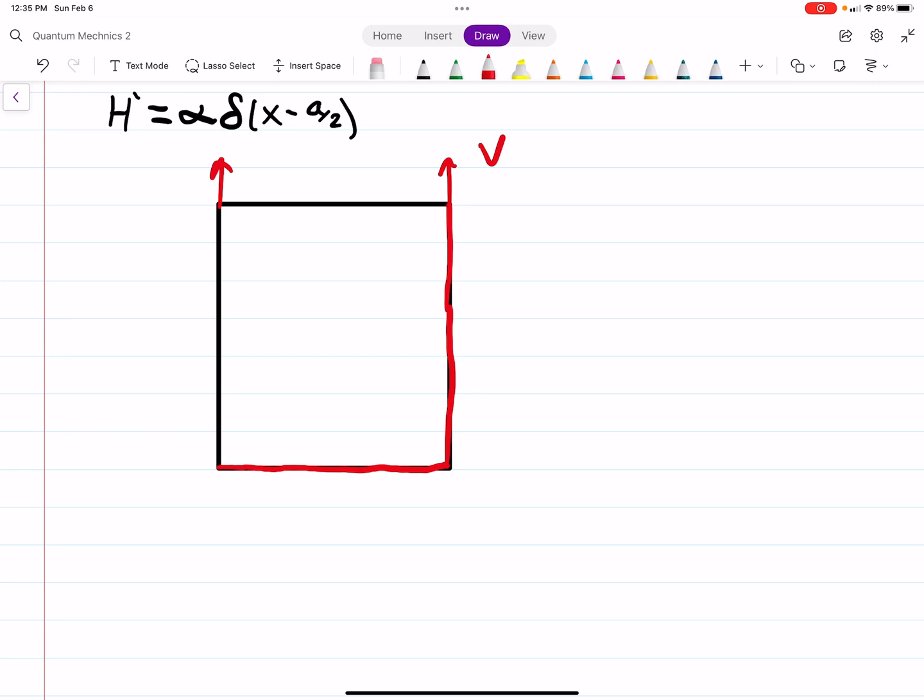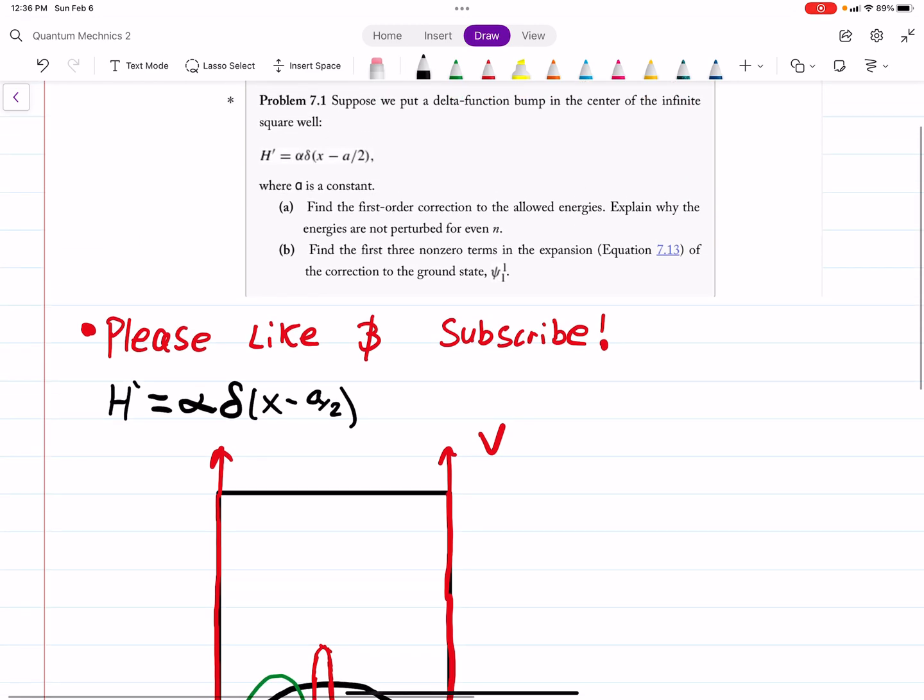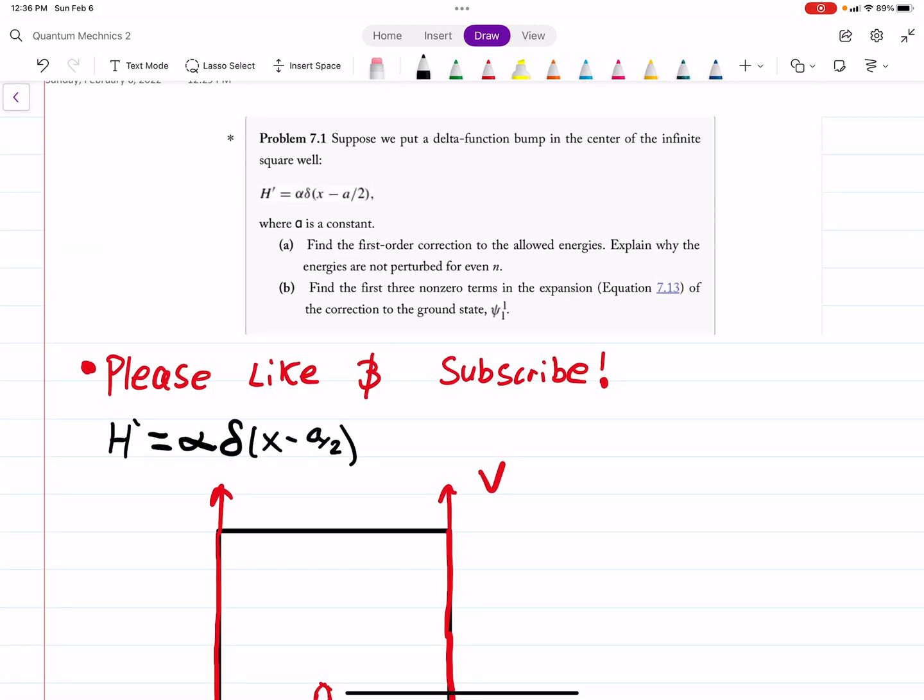Normally you'd get your little wave function, you could get something that looks like this and you're going to get your sine waves. The only difference is there's going to be a bump, a delta bump, right in the middle. So it's not exactly an infinite square well. It's close. And we're going to use perturbation theory to find the energies and the correction to the ground state.